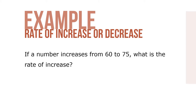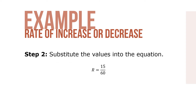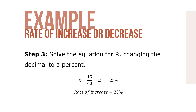Here's an example of a rate increase or decrease. If a number increases from 60 to 75, what is the rate of increase? Step 1: The original amount is 60, the new amount is 75, and the difference is 15. Step 2: Substitute the values into the equation. The portion is the difference between the amounts — 75 minus 60 equals 15 — and the base is the original amount, 60. Step 3: Solve the equation for r. r equals 15 over 60 equals 0.25, which is 25%, representing the rate of increase.